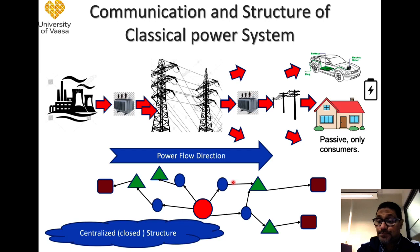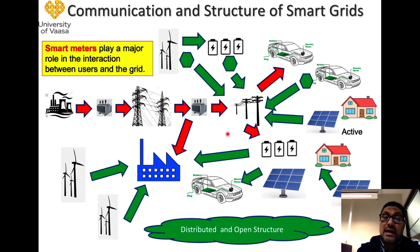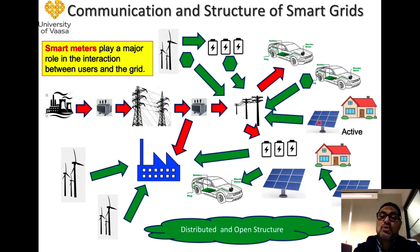In the smart grid, the structure is essentially different. Now the power flow can go from both directions. The classical power plant is still part of the smart grid, but from the consumer side, the power can also go in the other direction. For example, we have active customers who might have solar panels or wind turbines. When they generate more power than needed, they can sell the power back to the network or to the grid.